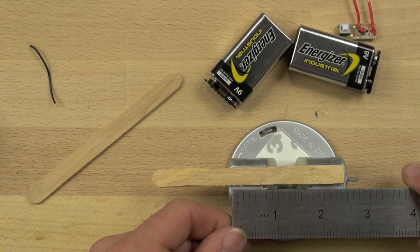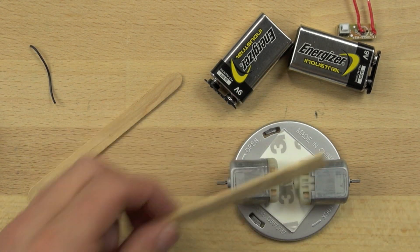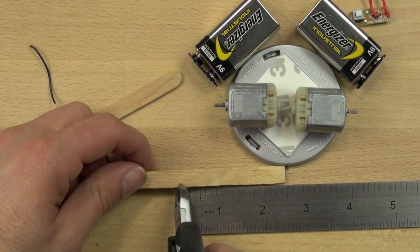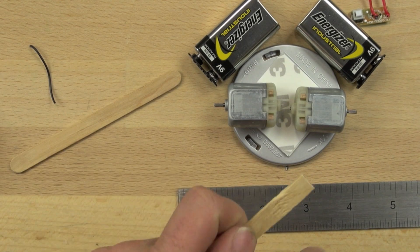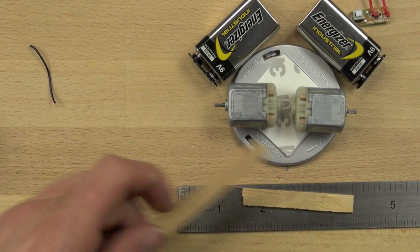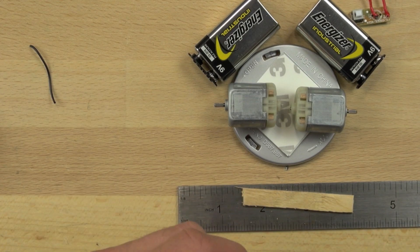Now we're going to measure the distance. It looks like we need about two and a half inches. The popsicle sticks need to be about two and a half inches long, and we can just trim the popsicle stick down using that nipper pliers that we've got. Once it's two and a half inches long, we'll cut another piece the exact same.